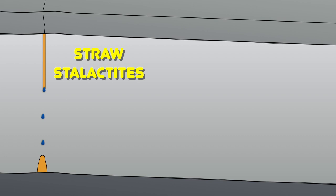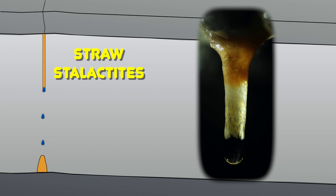Stalactites are formed when water rich in calcium hydrogen carbonate drips through a crack in the roof of a cave passage. While a drop of water is hanging from the ceiling, a few molecules of calcium carbonate — also called calcite — crystallize out and form a ring around the outside of the drop. This happens with every drop that forms, and over thousands of years a hollow straw stalactite is formed. I've seen straws over three metres long. They are so fragile that one dares not breathe near to them.